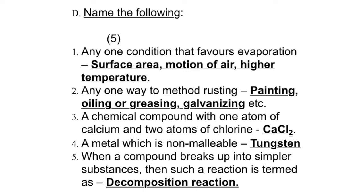Name the following: First, any one condition that favors evaporation - it can be surface area because that increases the rate of evaporation, or it can be motion of air, or it can be higher temperature. Second, any one way to prevent rusting - either it can be painting or oiling or greasing or galvanizing.